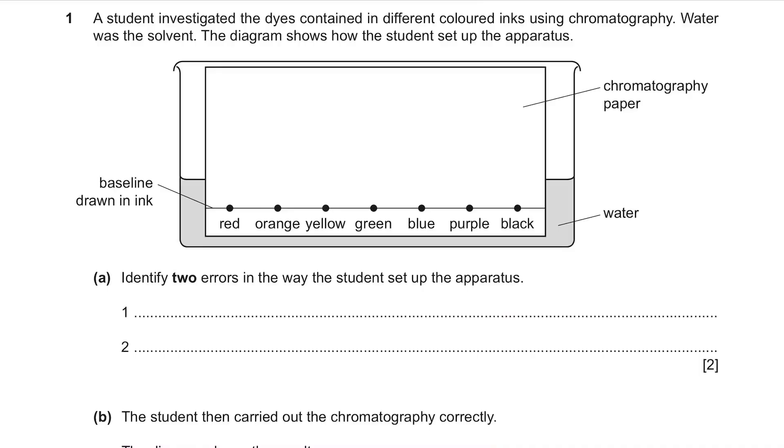Part A. Identify two errors in the way the student set up the apparatus. We have chromatography paper here, water the solvent, baseline drawn in ink and the different colours from red to black. One obvious error is that the baseline is drawn in ink. It's supposed to be drawn with pencil so that it doesn't spread together with other coloured inks. If it's an ink, it will spread and mess up the experiment.